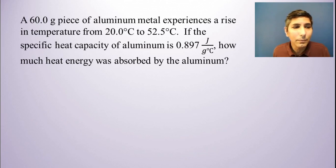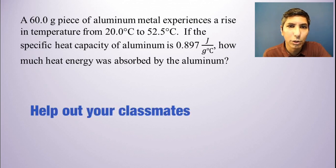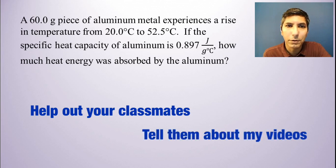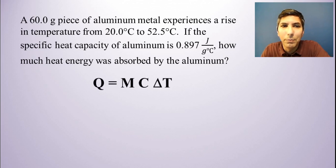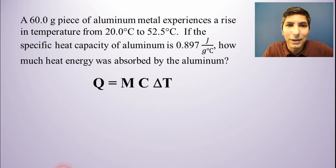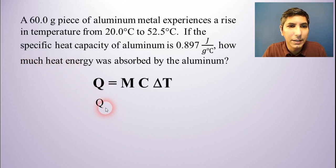A 60.0 gram piece of aluminum metal experiences a rise in temperature from 20 degrees Celsius to 52.5 degrees Celsius. If the specific heat capacity of aluminum is 0.897 joules per gram degree Celsius, how much heat energy was absorbed by the aluminum? We're going to use Q equals MC delta T and just plug and chug into this equation. Q is what we're being asked to solve for — how much heat energy was absorbed.